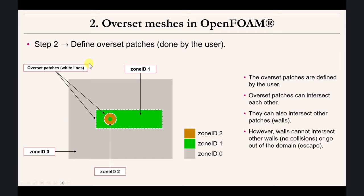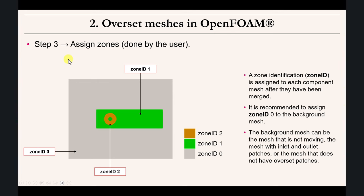In step two you define the overset patches. Depending on the complexity of your mesh assembly this can be a bit tricky — order is important and there are rules in OpenFOAM as in any other CFD solver. The overset patch or boundary is where the solution passes from one mesh level to the other and vice versa. You also assign priority levels — in OpenFOAM, zone zero is typically the background mesh, the largest mesh that collects all information.